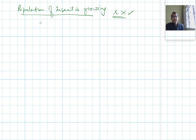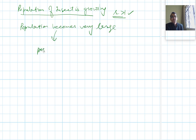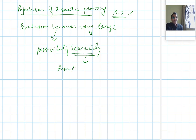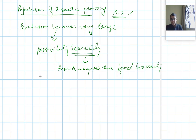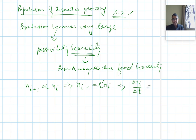When the population becomes very large, there is a possibility of food scarcity. If food scarcity exists, insects may die due to it. So we have to keep these factors in mind. We know that N_i+1 is proportional to N_i, or N_i+1 = r′·N_i, which can also be written as ΔN_i/Δt = r′·N_i. These two representations are identical.